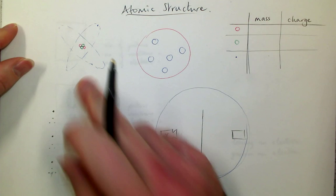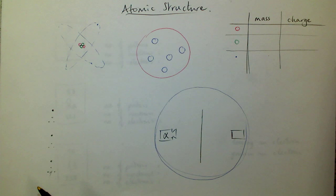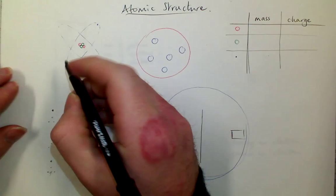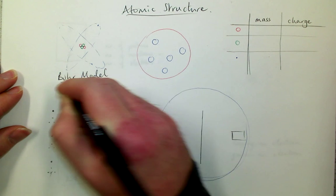Now we're all quite used to these days an atom that looks something like that with a small positive nucleus in the center and electrons orbiting around. But that wasn't always the accepted view.